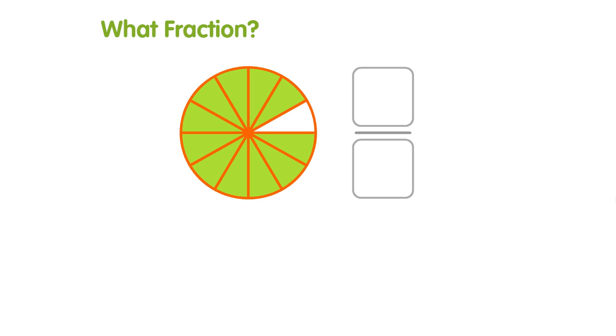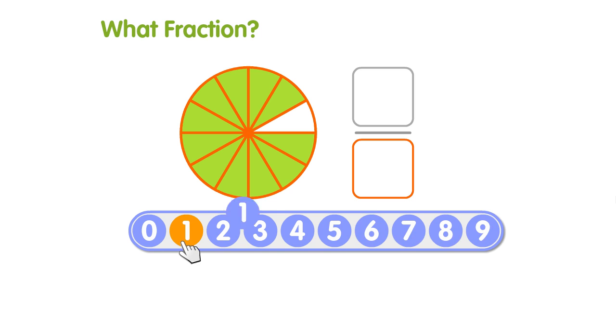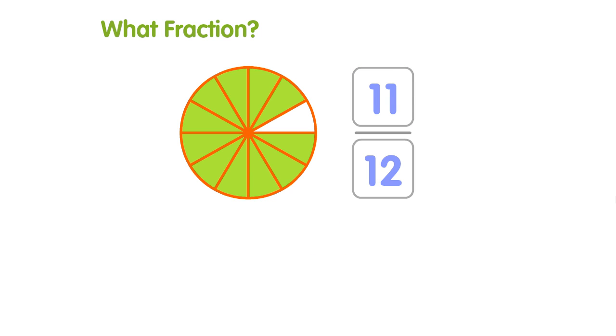In this question we have to find both the denominator on the bottom and the numerator. The circle is split into twelve, so this is the denominator. Eleven parts are coloured, so that goes on top, the numerator. The fraction is eleven twelfths.